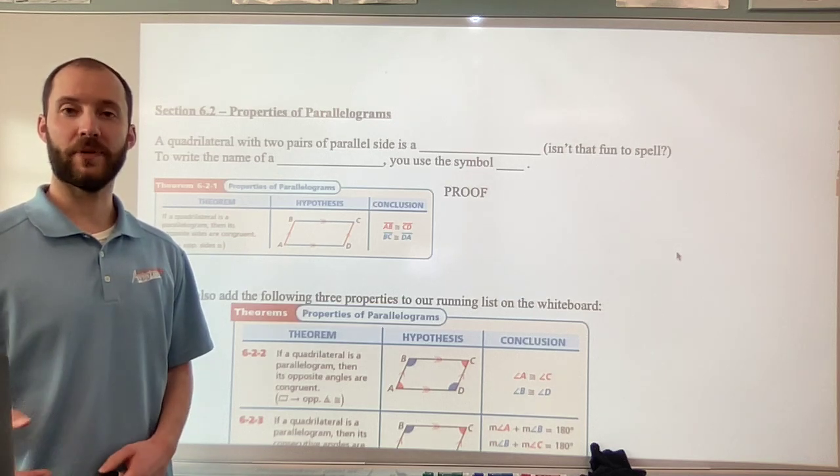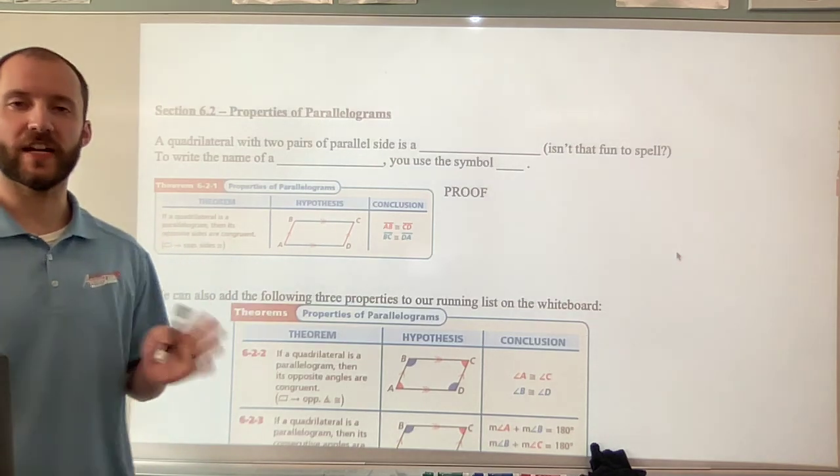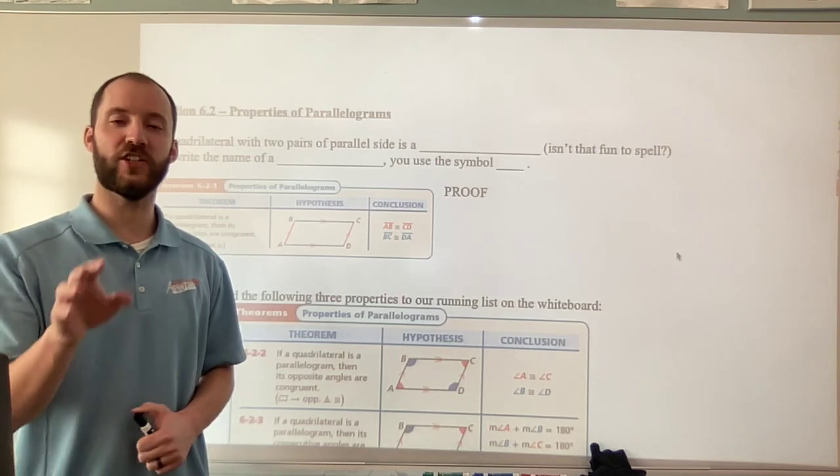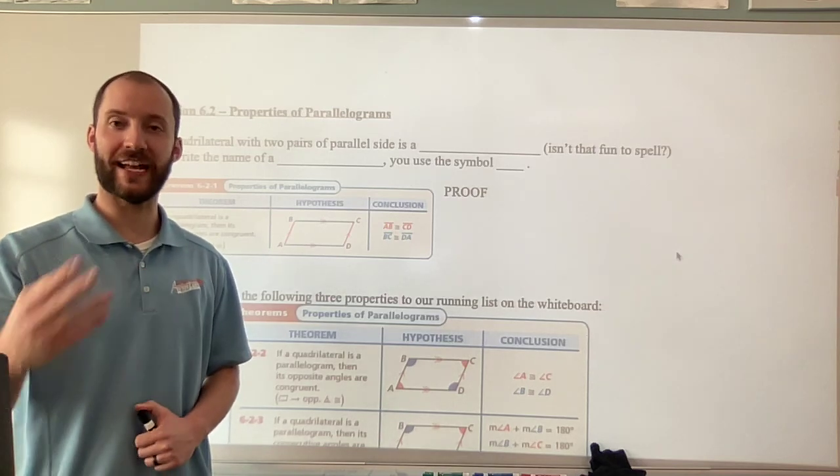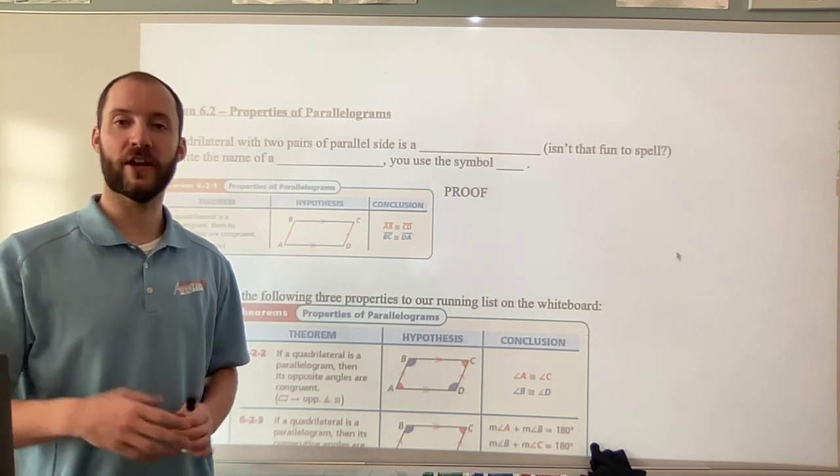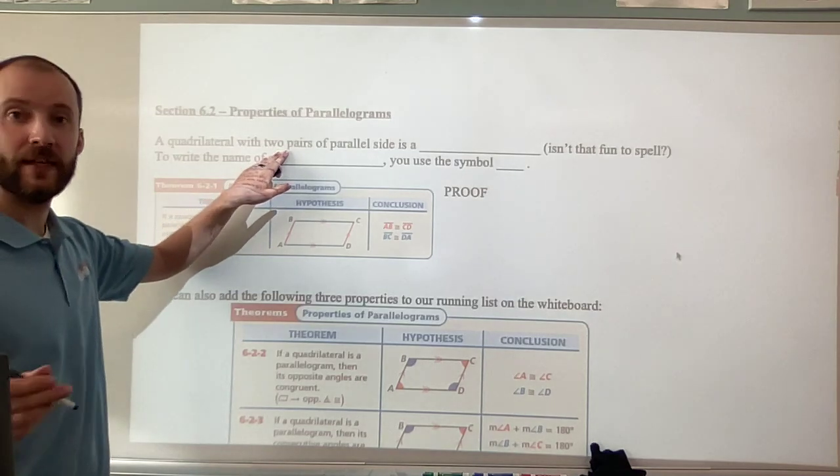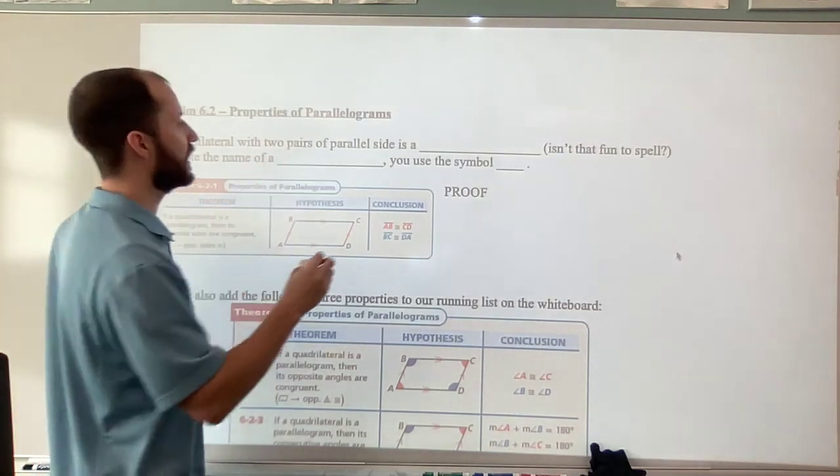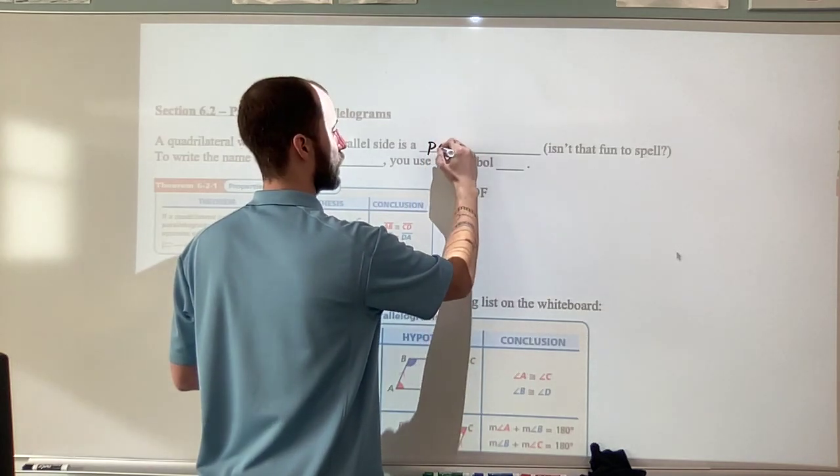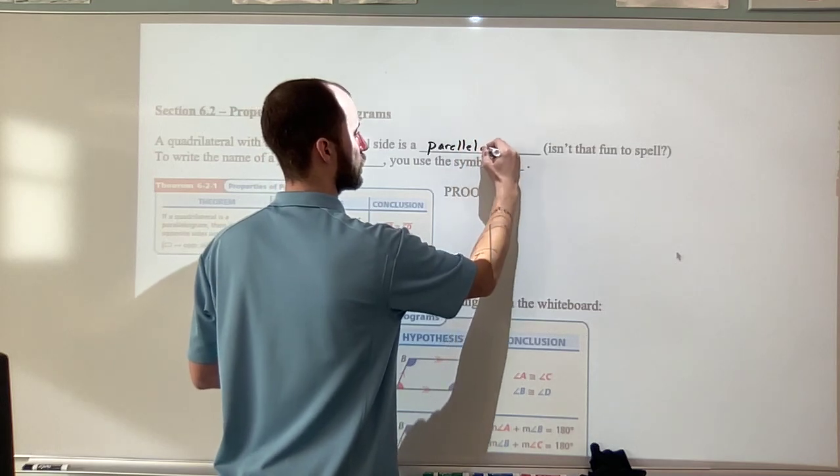Section 6.2, Properties of Parallelograms. So we're going to take our study of polygons and look at specifically these four-sided shapes, these quadrilaterals, with two pairs of opposite parallel sides. So two pairs, that's a requirement of opposite parallel sides, is a parallelogram.